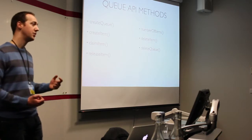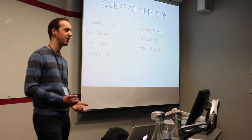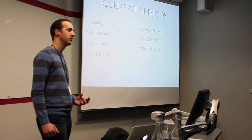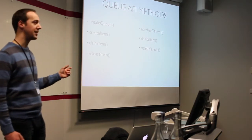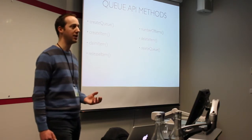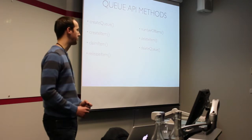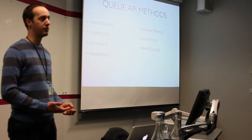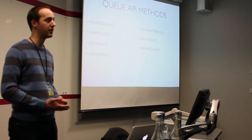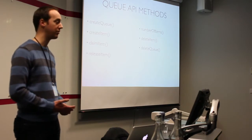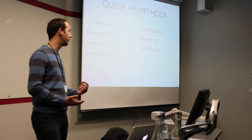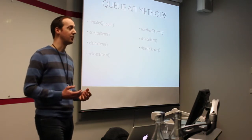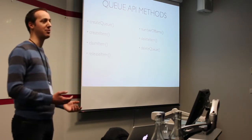releaseItem is effectively an unclaim — if you've finished with an item before the lease expires, you can call releaseItem to set that lease back to zero and allow other processors to pick it up. This is the opposite of deleteItem, which removes the item completely from the queue, meaning you've finished processing successfully. numberOfItems — not all backends support this — tells you how many items are in the queue; for a database queue that's a SELECT COUNT from the queue table where the name matches.